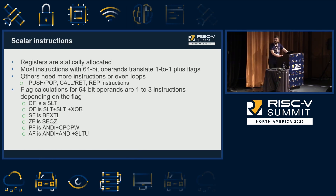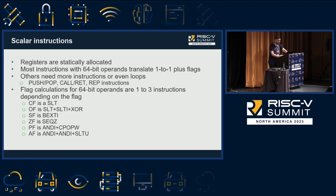We're going to start with how we emulate scalar instructions. RISC-V has 31 general-purpose registers, while x86 has 16, so the x86 registers are statically allocated into RISC-V registers, which has some benefits.